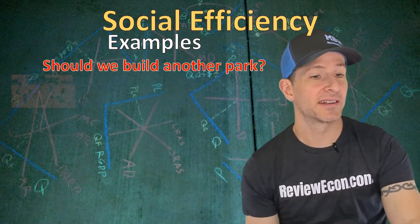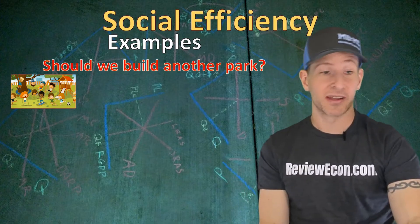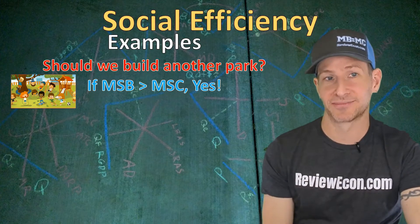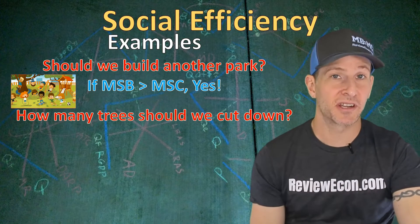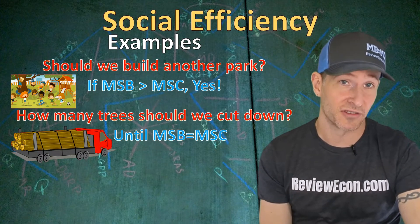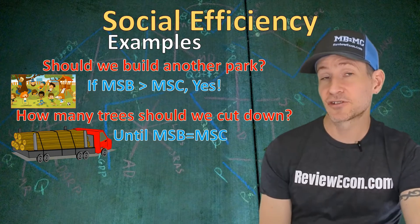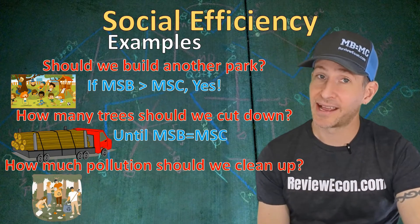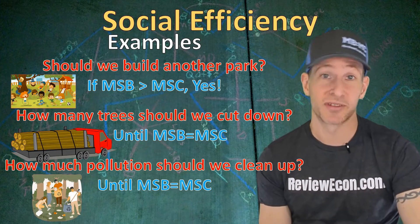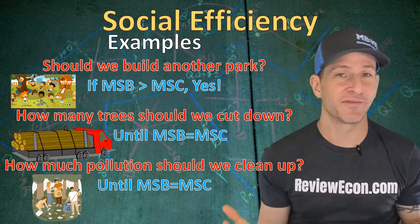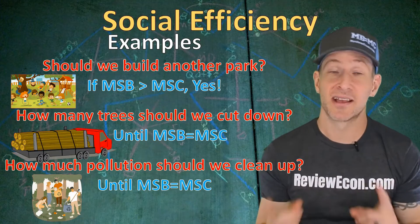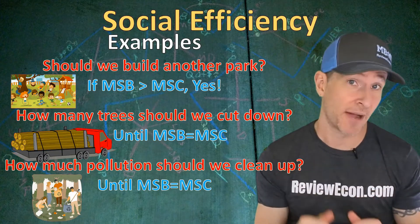Here are some examples. If we're trying to decide whether we should build another park and the marginal social benefit is greater than the marginal social cost, yes — build that park. If we're deciding how many trees to cut down to build houses, we should cut trees until the marginal social benefit equals the marginal social cost, then stop. If we're deciding how much pollution to clean up, we should clean up until the marginal social benefit of cleaning equals the marginal social cost of cleaning, then stop. In reality it's difficult to figure out these marginal social costs and benefits, but if we can figure them out, that would be the socially optimal outcome.